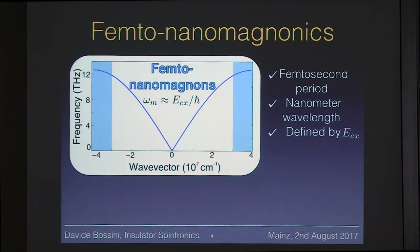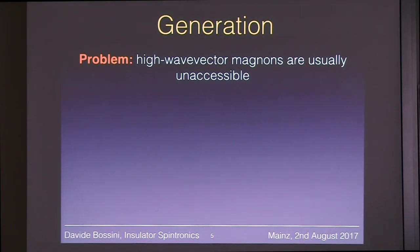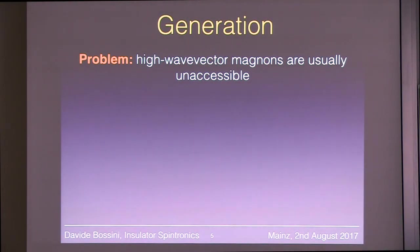Our strategy is clear: we want to study spin dynamics generated by triggering femto-nanomagnons on the ultrafast timescale. The idea is simple and straightforward, but not easy to execute, because there is no femtosecond stimulus that can simultaneously match the frequency and the wave vector of these high-energy magnons. However, sometimes you can solve this problem, and now I'm going to show you how.